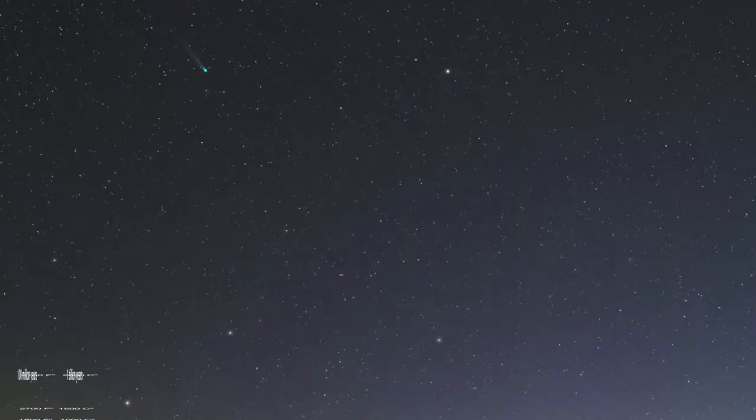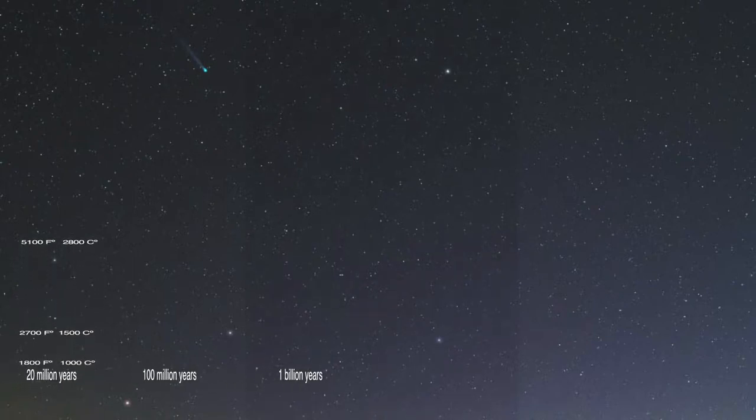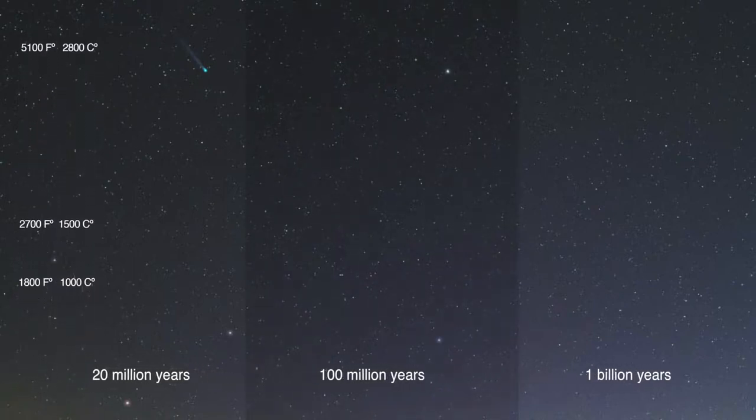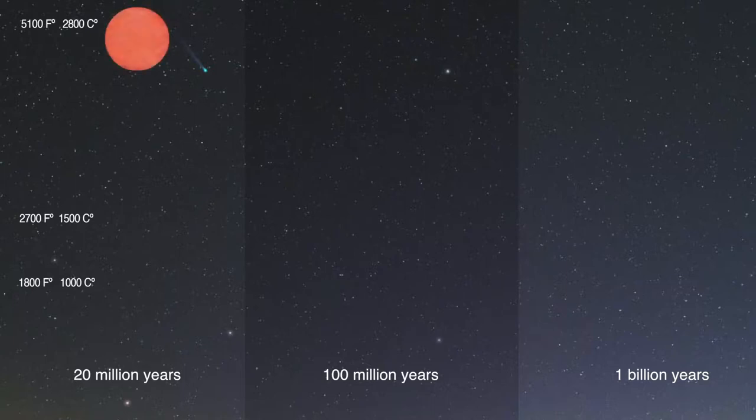If WISE J0304-2705 is an ancient object, then its temperature evolution would have followed through an understood series of stages. During its first approximately 20 million years, it would have a temperature of at least 5,100 degrees Fahrenheit, or 2,800 degrees Celsius, the same as red dwarf stars like Proxima Centauri, the nearest star to the Sun.